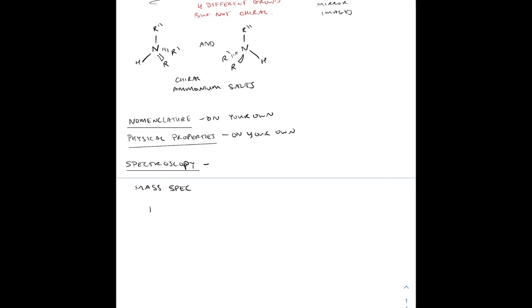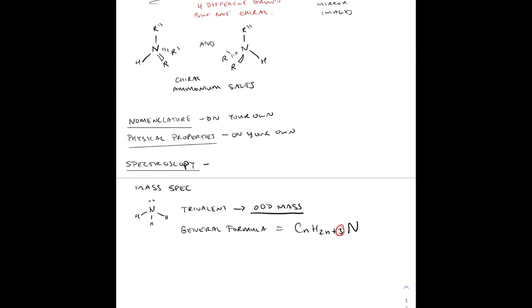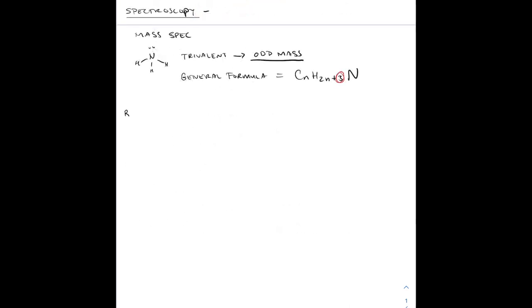Let's move on to spectroscopy. For mass spec, nitrogen, since it is trivalent, is going to give an odd mass. And so that's usually a good indication that you have a nitrogen — it screams out and is super helpful in determining what you have. The general formula, therefore, is CnH2n+3 with a nitrogen at the end. So that is different than a hydrocarbon, which would be CnH2n+2 for a completely saturated compound.